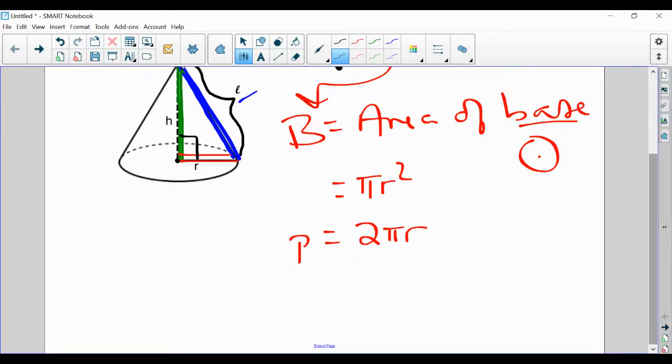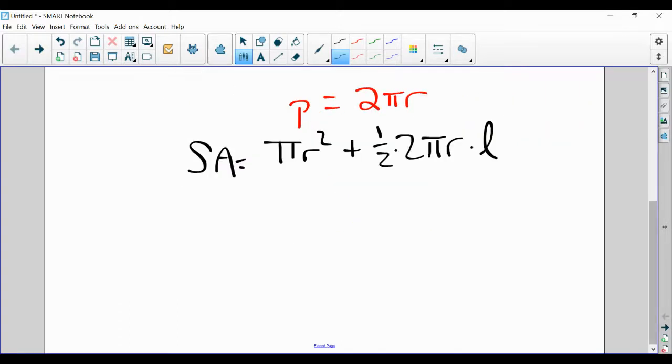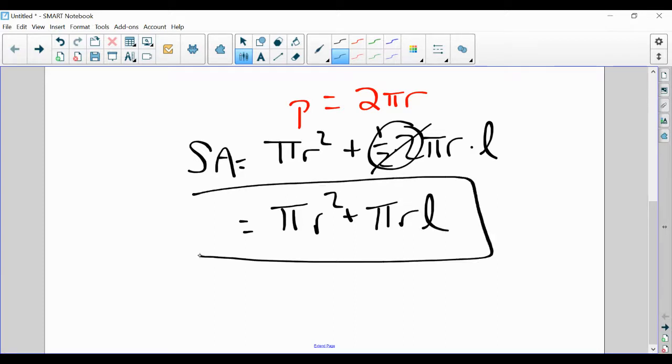So just to summarize, our surface area is going to be pi r squared, the area of the base, plus one-half times perimeter 2 pi r times the slant height. And to simplify, pi r squared plus the one-half and the two, they cancel out. And we're left with pi r L. So our formula for the surface area of a cone is pi r squared plus pi r L.